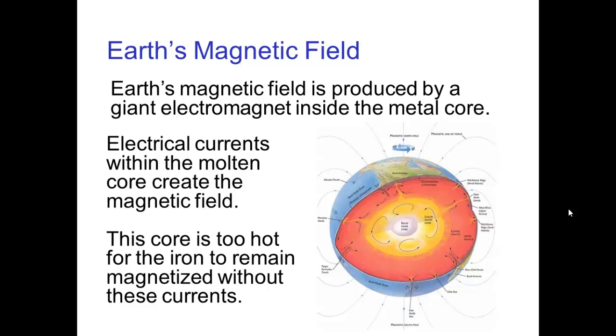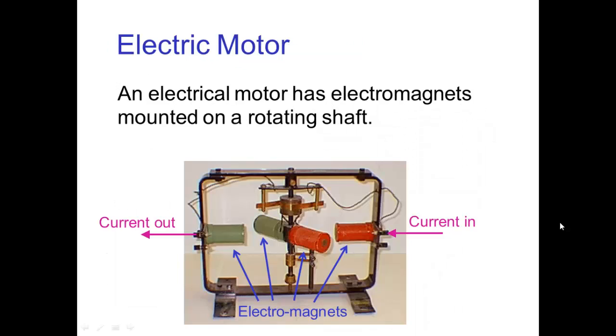We know it's not a permanent magnet because as we saw, when iron gets hot, it can't retain the alignment and it's extremely hot in the core of the Earth.